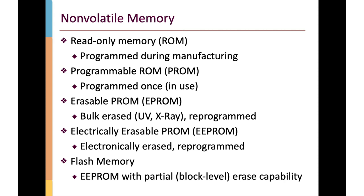The next step in evolution was Programmable ROM, or PROM. Unlike ROM that had to be manufactured with the program built in, a PROM can be programmed electronically. Inside a PROM is a collection of little fuses — you apply a higher-than-normal voltage and supply information about which fuses to leave intact and which to blow. An intact fuse might store a one; a blown fuse might store a zero. However, you're physically modifying the chip, so you can only program each PROM chip one time.